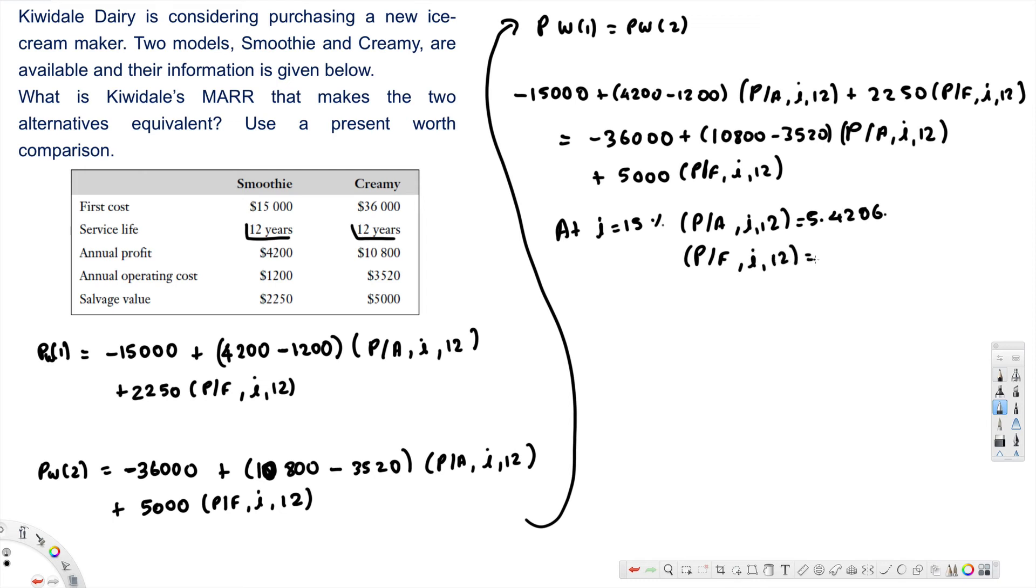And at i equals 20%, P/A, i, 12 is equal to 4.4392, and P/F, i, 12 equals 0.11216. So the right-hand side will become $19,308. Now let's create a table.